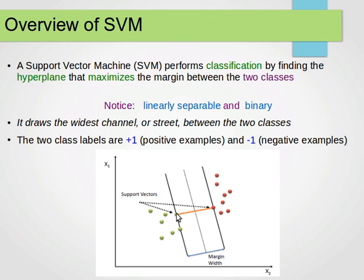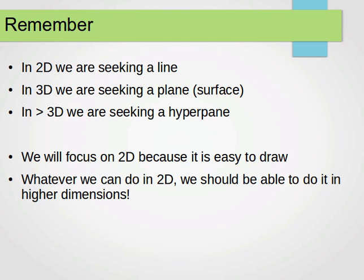Unlike the perceptron, support vector machines try to find the best line or the best plane or hyperplane that separates the data — not just any line. In perceptron or LDA they find any line that separates the data, whereas for support vector machines they find the best line: the one that separates the data furthest from all the classes, right in the middle between the two classes.